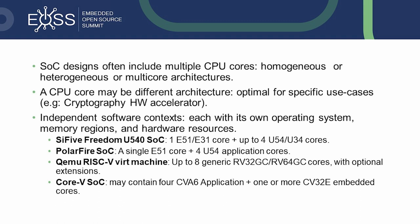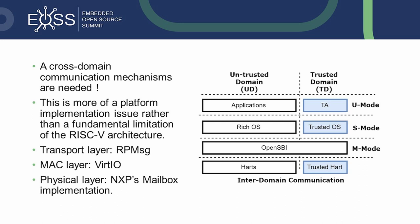For example, the QEMU RISC-V virtual machine has up to eight generic RISC-V cores with optional extensions — we could assign two to OP-TEE OS and the remaining ones to Linux. The Core-V SoC may contain four CVA6 application cores and one or more embedded cores. Assuming an SoC with four cores, we assign two cores to the secure domain owned by OP-TEE OS, and the remaining two to Linux. In that case, a cross-domain communication mechanism is needed so that the Linux OS can request operations from the OP-TEE OS.